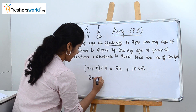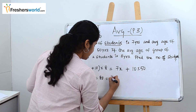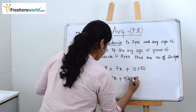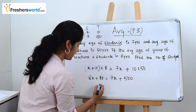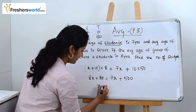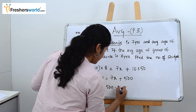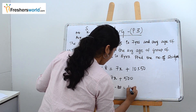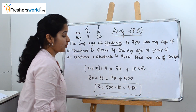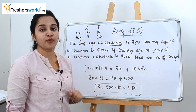Solving the equation: 8x plus 80 equals 7x plus 500. Bringing x to one side: 8x minus 7x gives x. Then 500 minus 80 gives 420. So the number of students is 420.